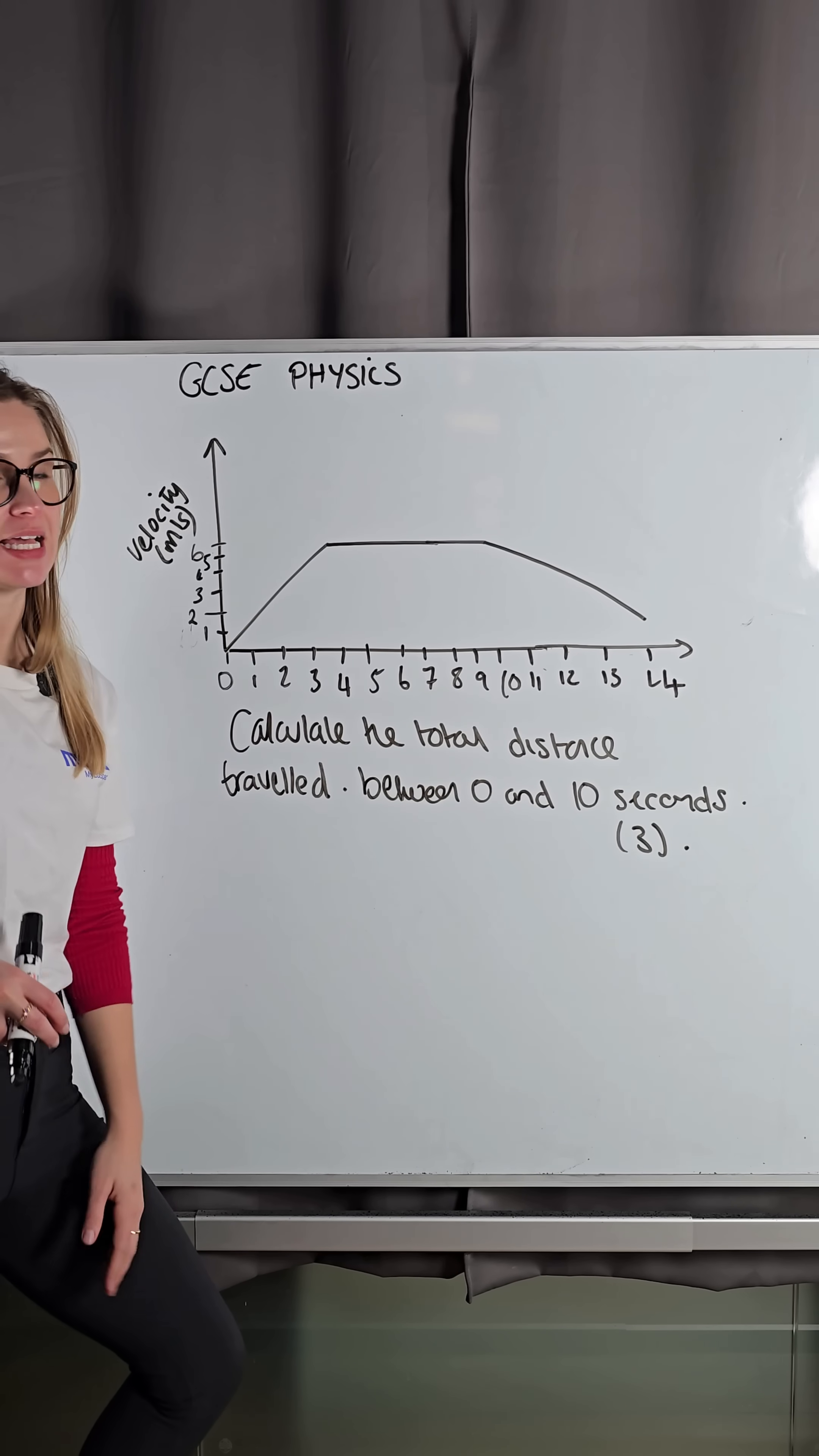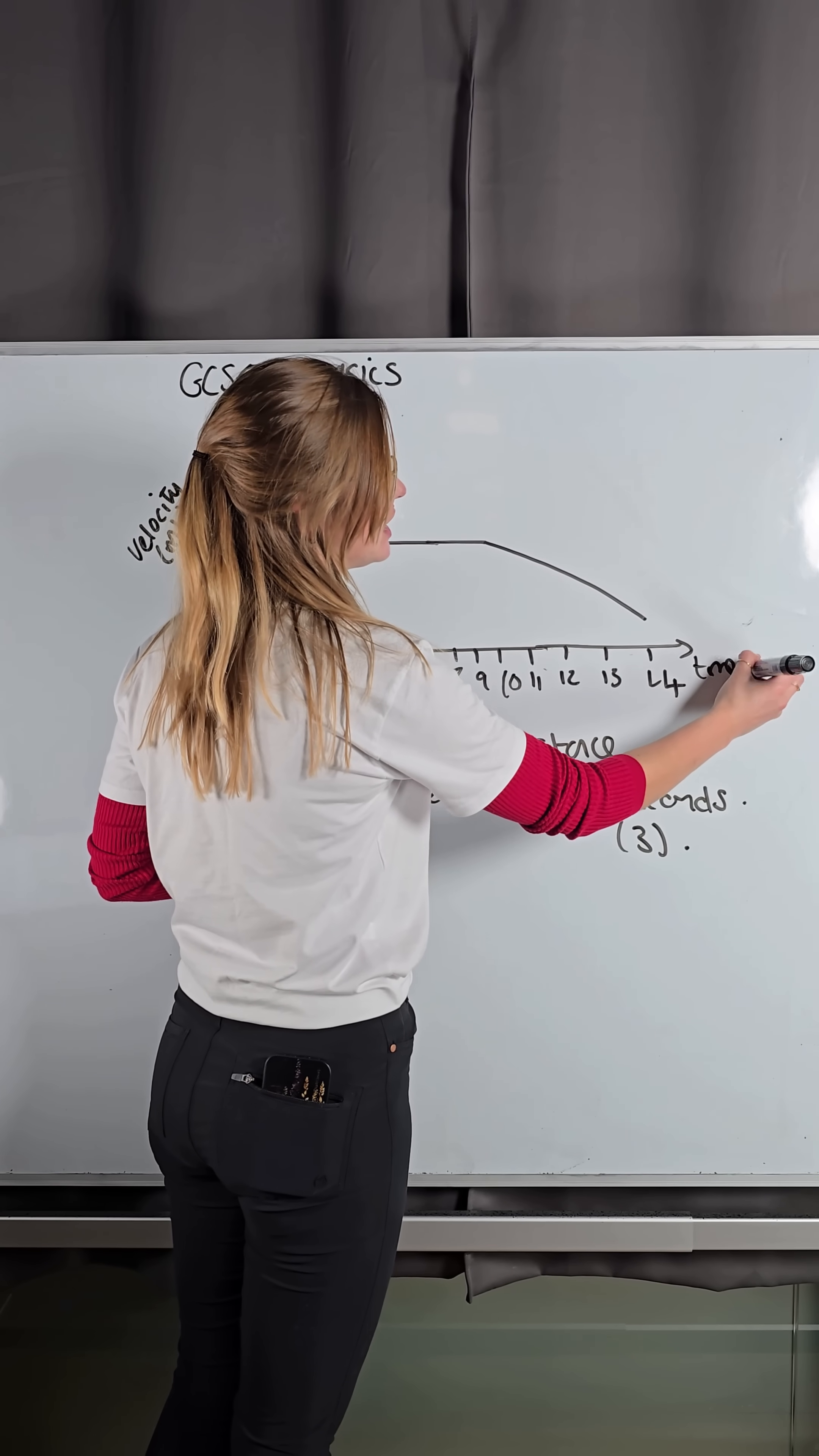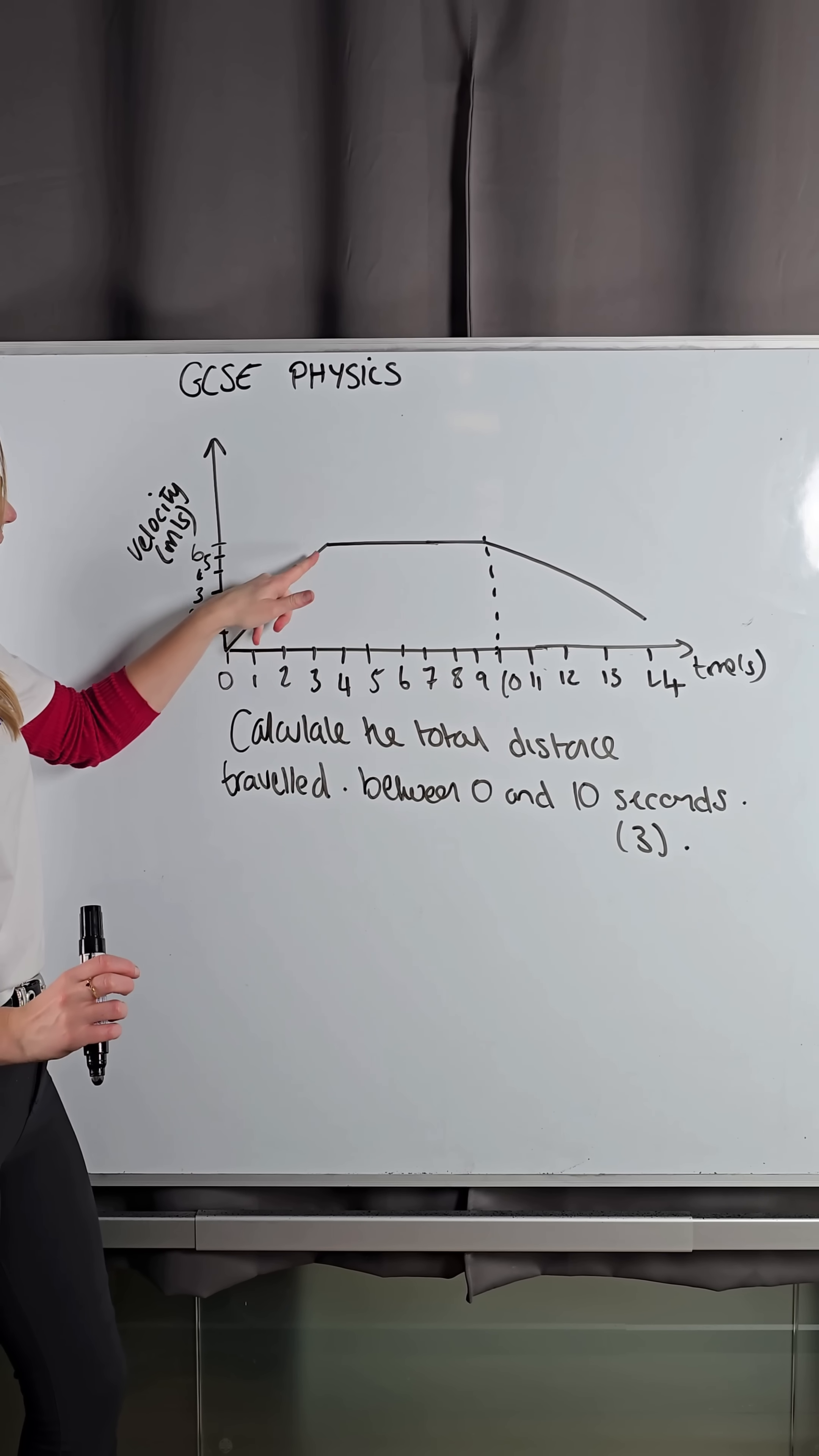So I want to find the distance traveled between 0 and 10 seconds. The first thing I do is I look at my time. Sorry, I should have wrote time in seconds here. And from where 0 to 10 seconds is, there's 10 seconds. So what I can see is here, my velocity is increasing, increasing, increasing, sort of accelerating.